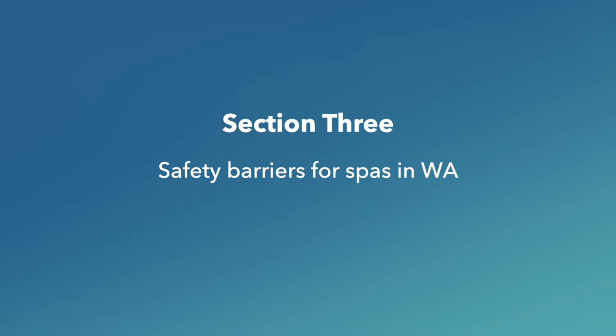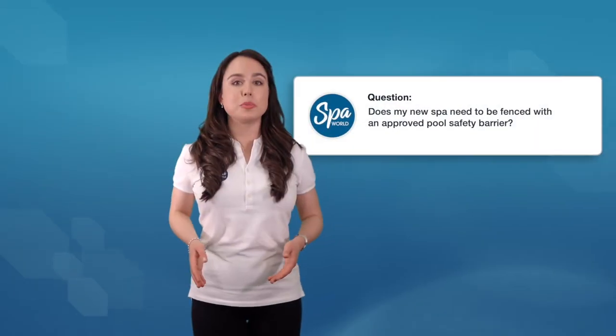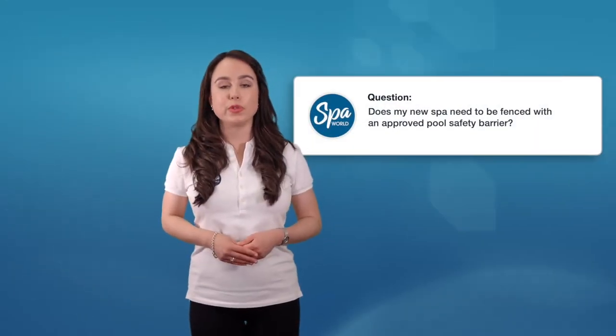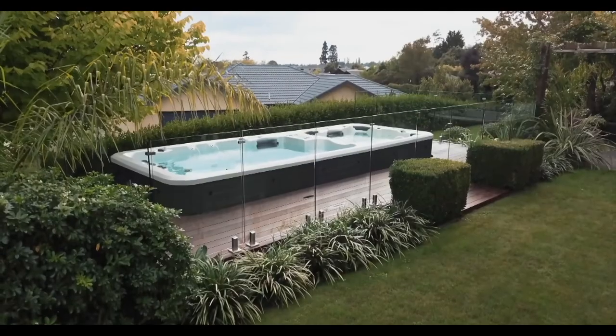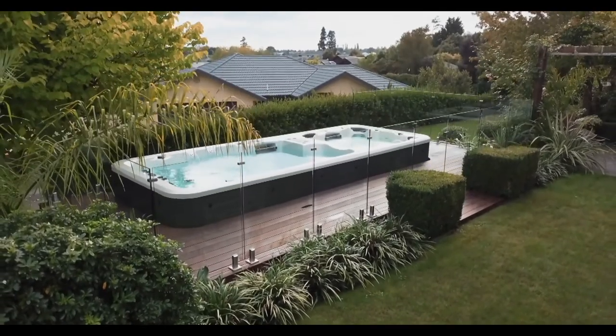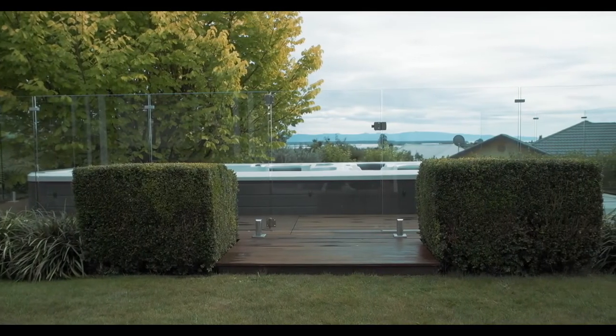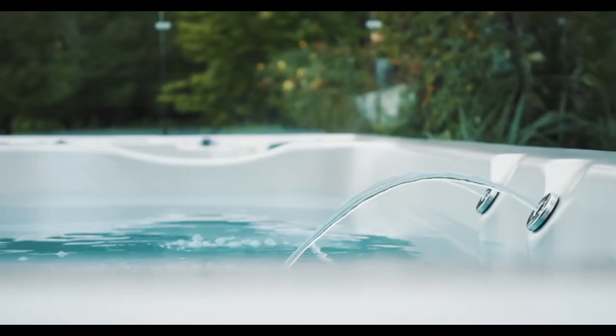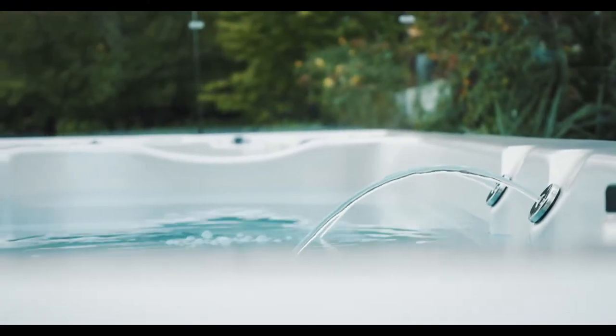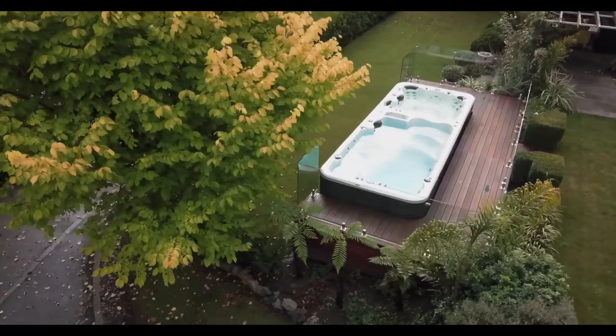Section three, safety barriers for spas in WA. Does my new spa need to be fenced with an approved pool safety barrier? Yes, according to legislation, a compliant barrier must be installed around private spas in order to restrict access to the pool by young children. A lockable hardcover is not considered to be a suitable barrier in WA.